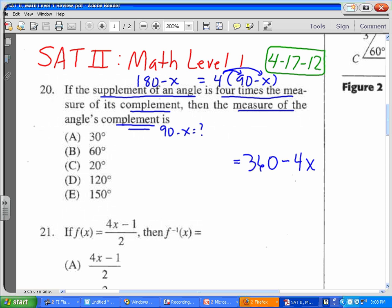And that was equal to what? 180 minus x on the left-hand side. And so now what we can do is add 4x on both sides, so we get all the x's on one side.